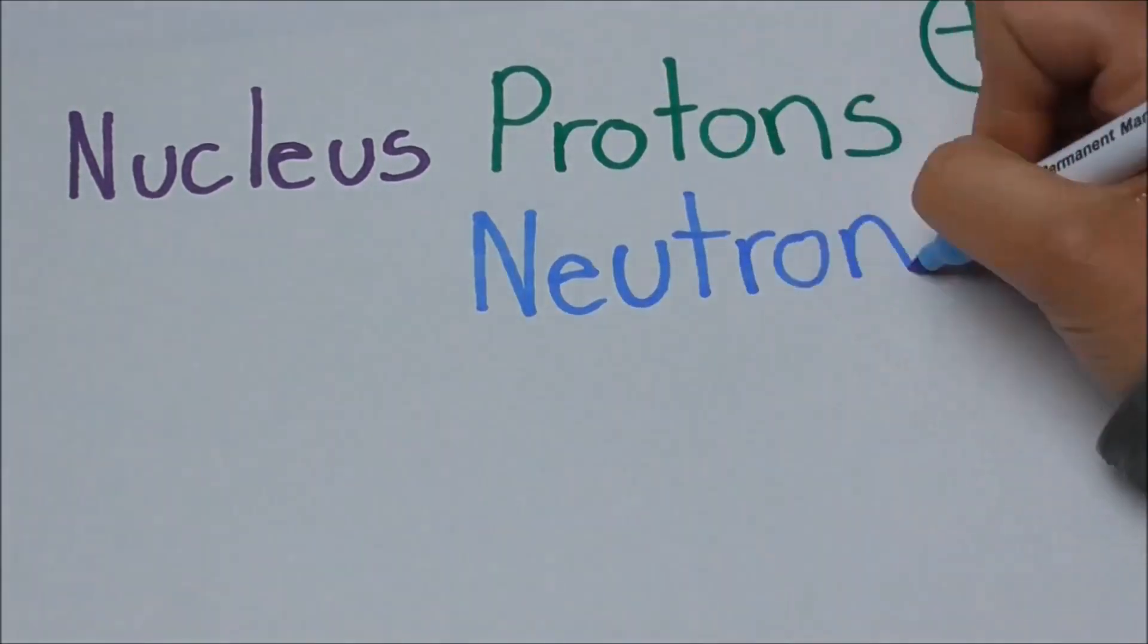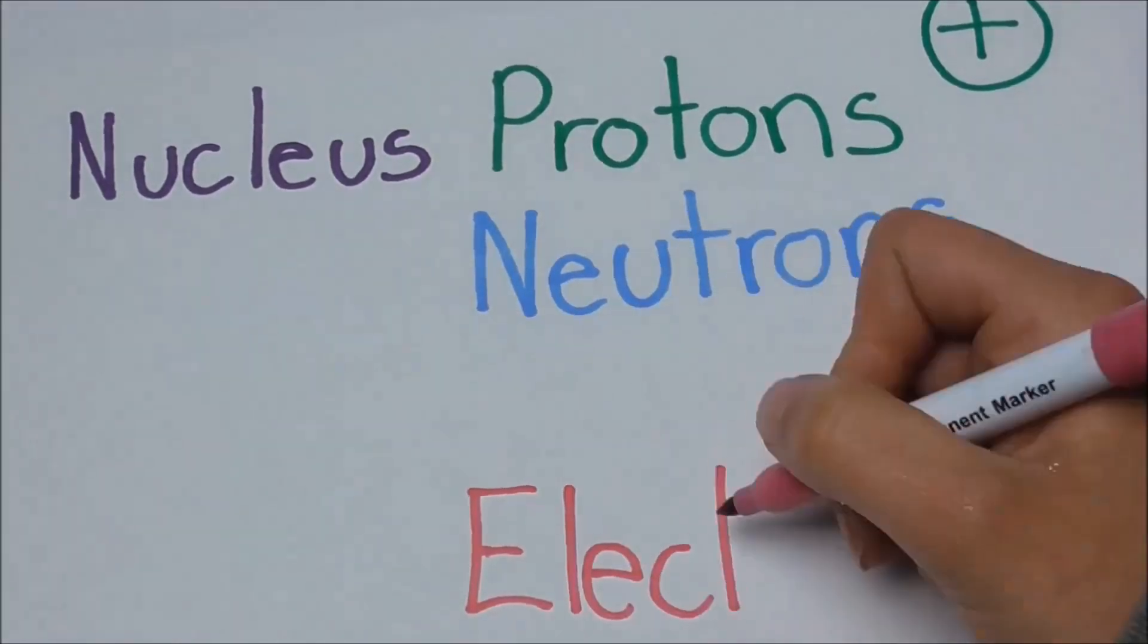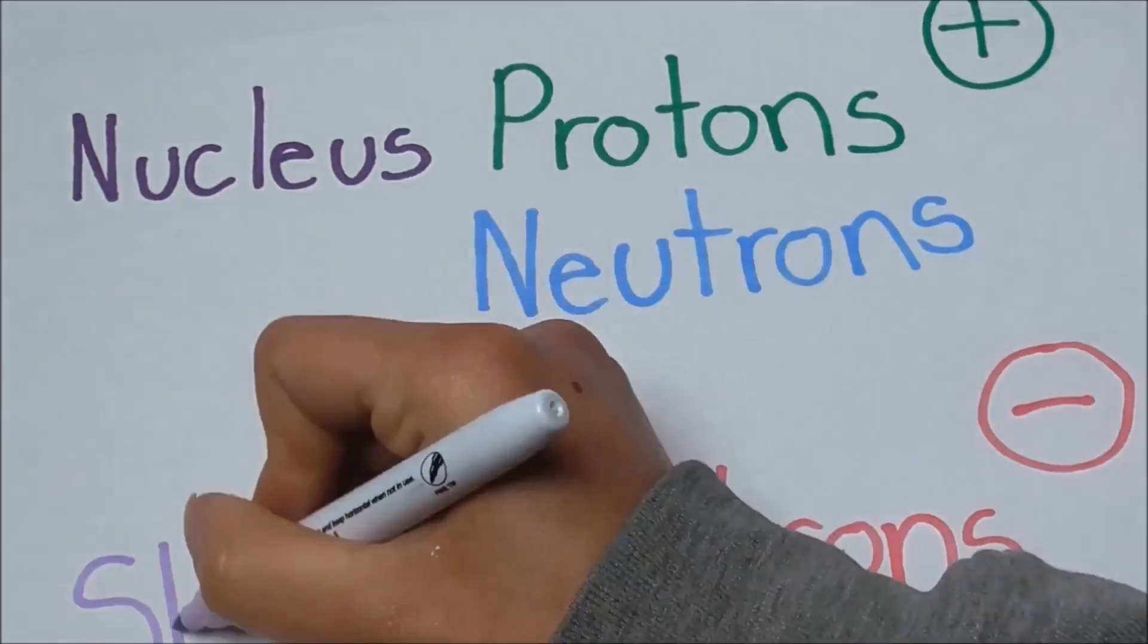Around the nucleus they have their shells, which are where the electrons hang out. They're the bits we're going to be looking at because they're doing the hard work.